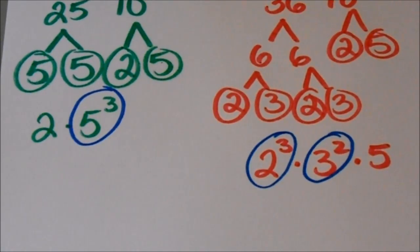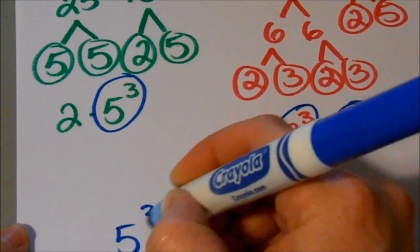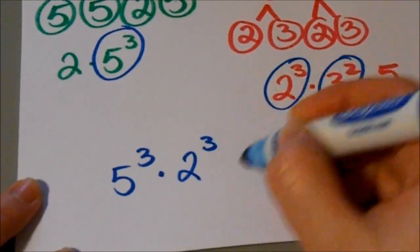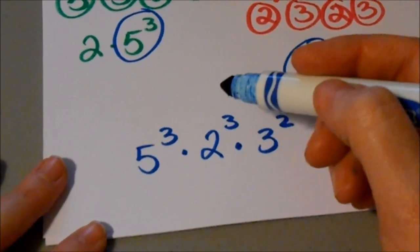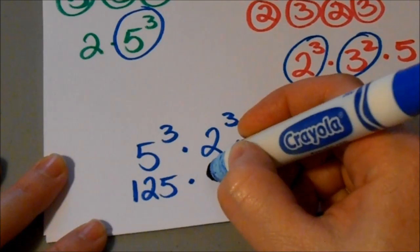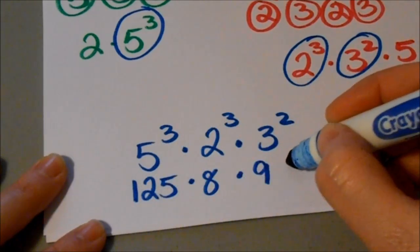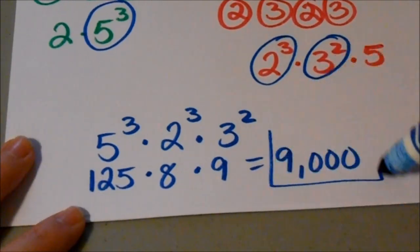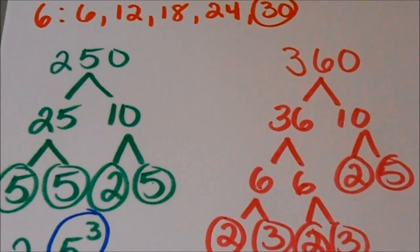So I take all of those numbers with the exponents that I've circled and I'm going to multiply them together. So 5 cubed, let me push this up, 5 cubed times 2 to the 3rd times 3 squared. So if you multiply all of this out, 5 cubed is 125 times 2 to the 3rd, 2 cubed is 8 and then 3 squared is 9. And when you multiply all of this together, it equals 9,000. So this is your LCM for 250 and 360.